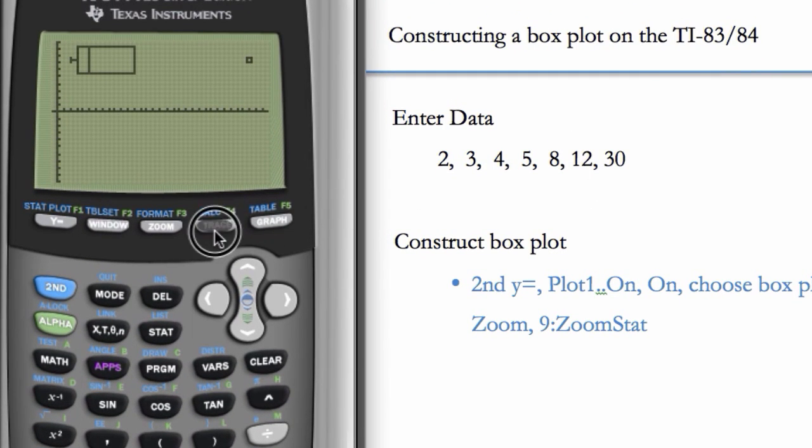So here let's hit trace and we'll see that the min is 2, hit the right arrow. We have a Q1 of 3, a median of 5, a Q3 of 12, which happens to also be the highest value in our data set that's not an outlier. So you can see there's no extra whisker here because Q3 is the highest value that's not an outlier. And now we have our outlier denoted separately at 30.